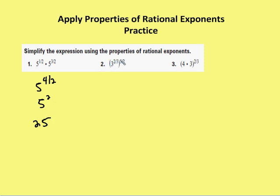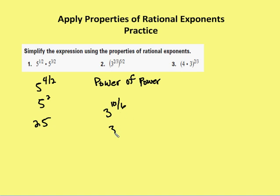Problem number two: 3 to the 2/3 taken to the 5/2. I'm going to use the power of a power property. I multiply the exponents together, giving me 3 to the 10/6, and I can simplify that to 3 to the 5/3. I can't simplify it any further, so I leave it as 3 to the 5/3.